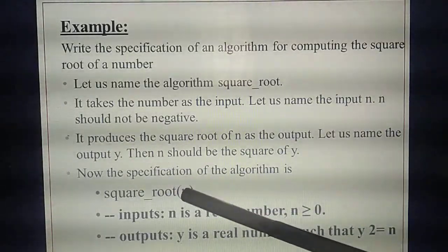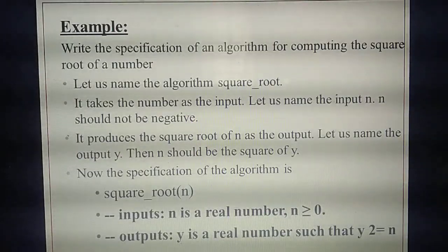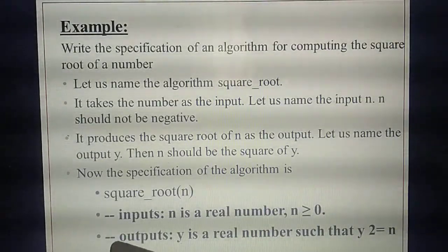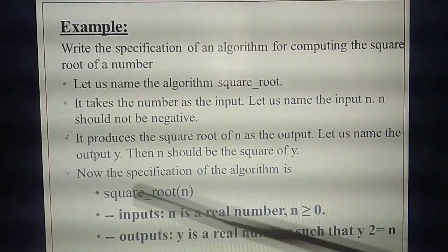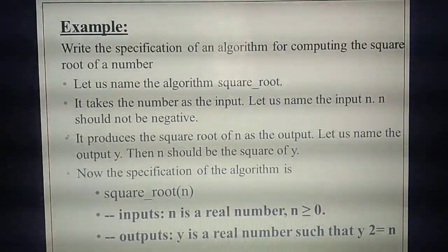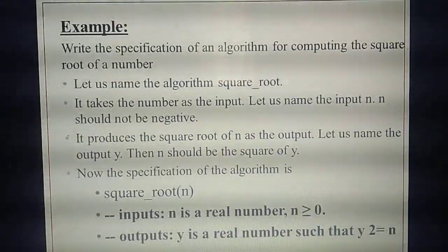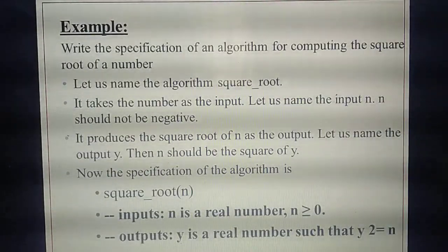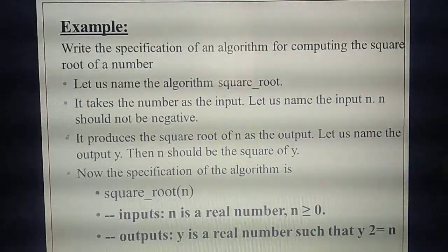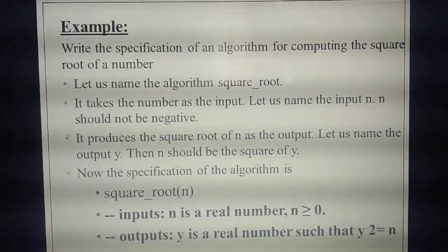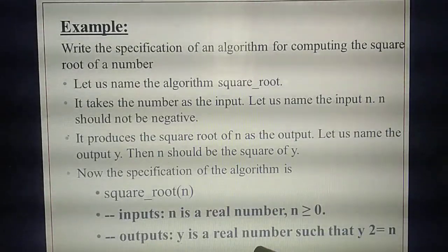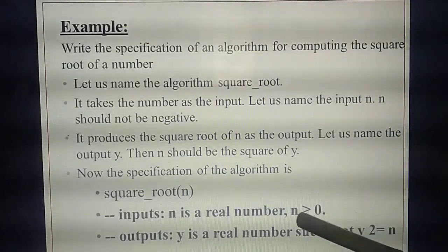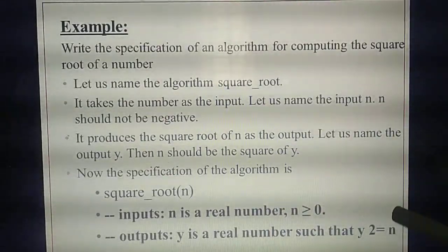Name of the algorithm is done. Input N is given. Property of input is written: N is a real number, meaning N ≥ 0. Now write the property of the output — also in a comment line starting with double dash. Output Y is also a real number, because input is real. For N = 2 squared, the answer 4 is also a real number. So Y is a real number, and Y² = N.